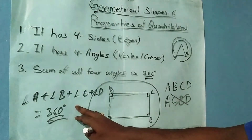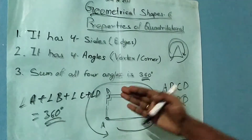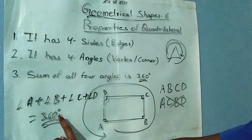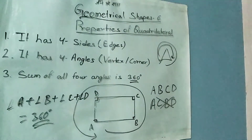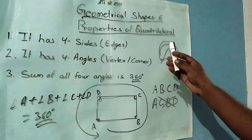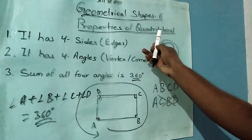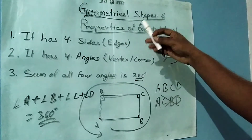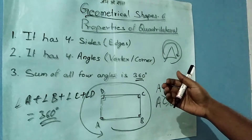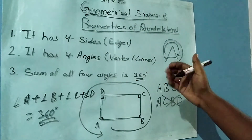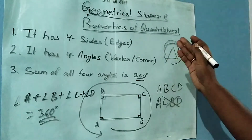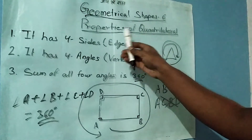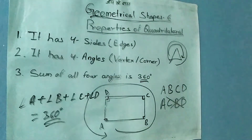This property applies to all quadrilaterals — the sum of the internal angles will be 360 degrees. So friends, you have seen the properties of quadrilateral. Geometry is very useful as it represents many things and will solve many problems. I hope the concept of properties of quadrilateral is now clear. Please watch my videos.